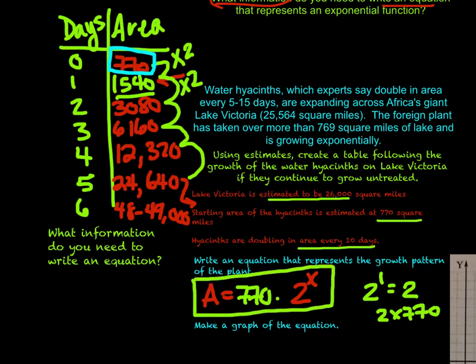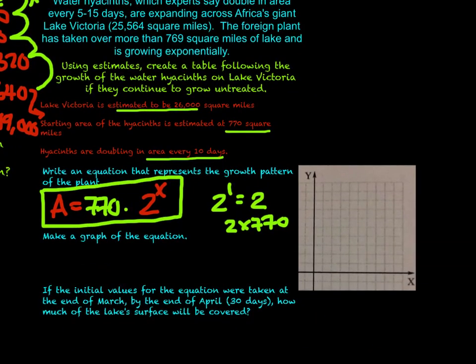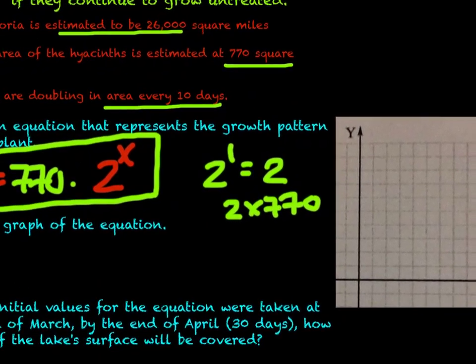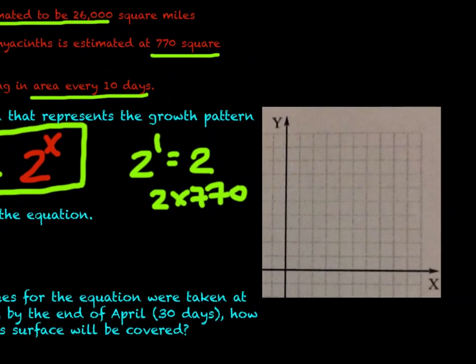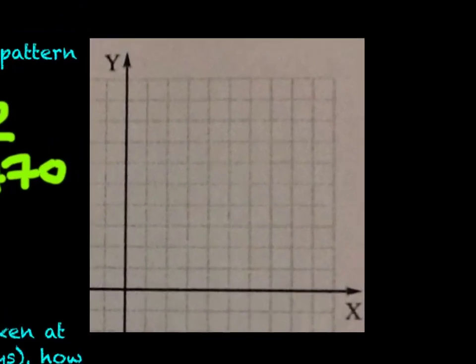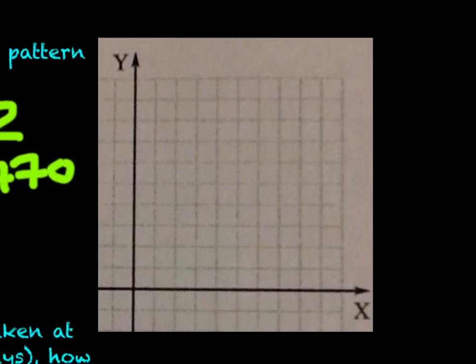Now moving on. Let's make a graph of this equation. So let's zoom in here a little bit. So we have our graph here. Our equation is y is equal to 770 times 2 raised to the power of x, or the number of days that have gone by. So let's do a little math magic. I'm going to create a scale along the bottom, and then I'm going to create a scale on the y-axis as well. So hold on a second.